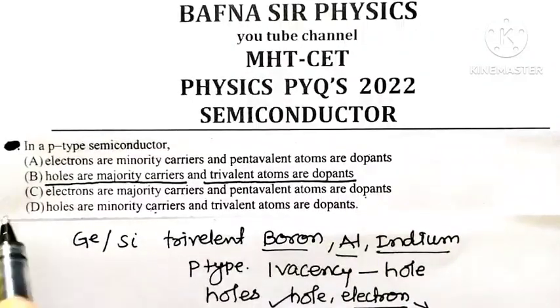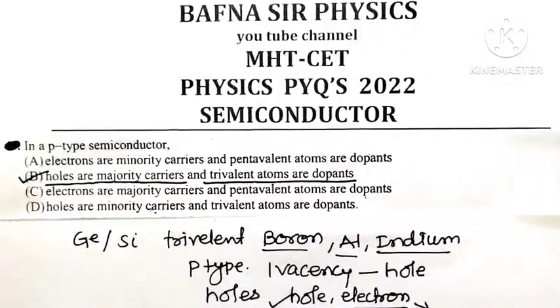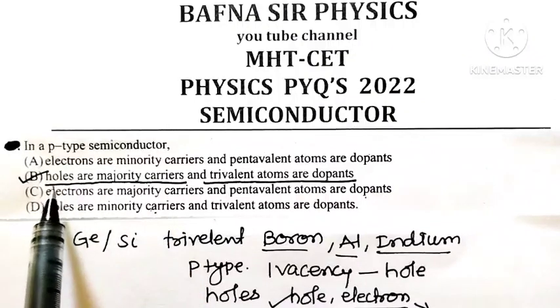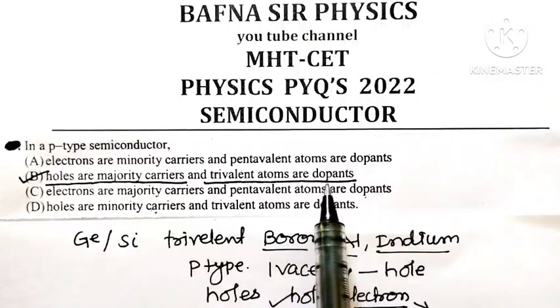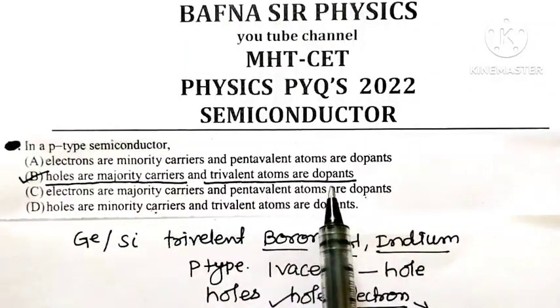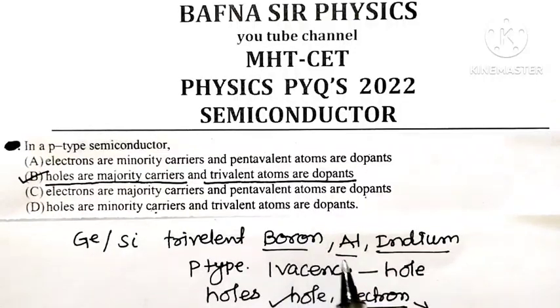So the correct option for this question is option B. In P-type semiconductor, holes are majority charge carriers, electrons are minority charge carriers, and trivalent atoms are dopants. What are the examples of trivalent atoms? Boron, aluminium, and indium. They are trivalent impurities.